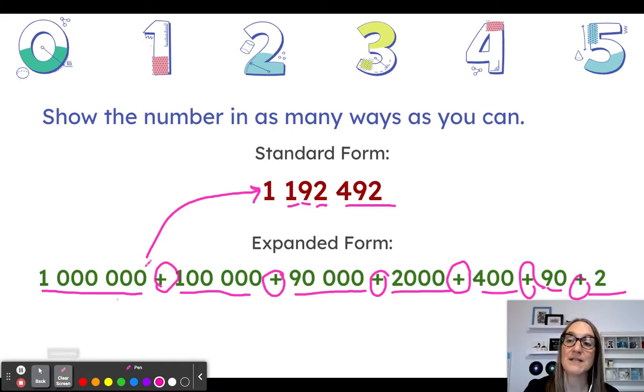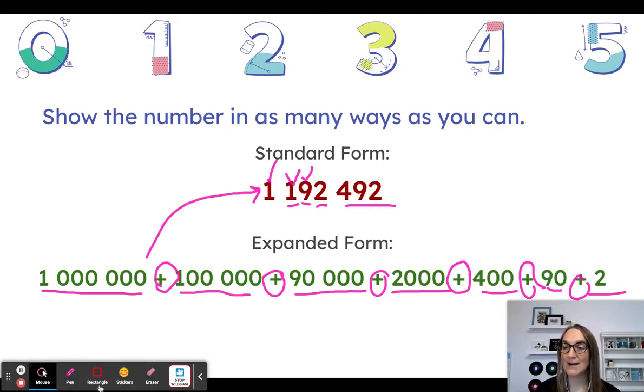You can see so many zeros there, all those plus signs, so many places to kind of lose track of stuff and make a mistake. So when you're writing numbers in expanded form, follow this strategy, start at the left, you can even check them off as you do them so that you know that you're not missing anything.